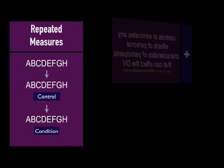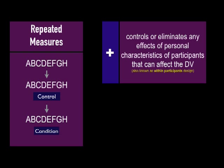Now, this helps, obviously, control or eliminate any effects of personal characteristics that can affect the DV. Because it doesn't matter if we've got professional athletes or amateurs in the total group, both of them will experience the experimental condition. And so therefore, we will see how it affects every single one of them before, without the treatment and with the treatment. This is why it's sometimes known as the within participants design.